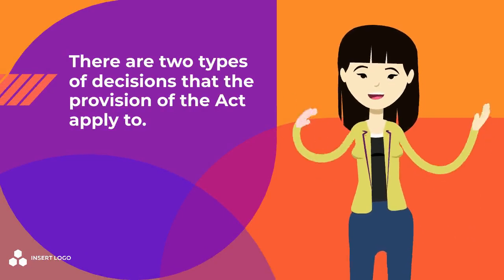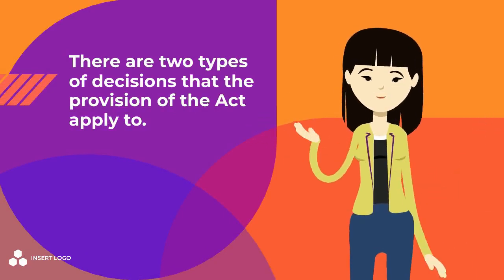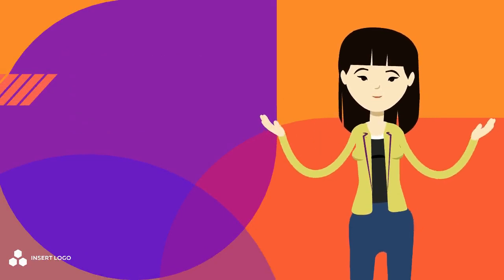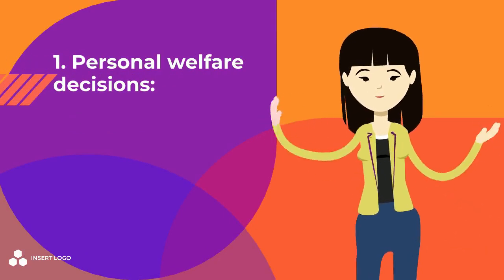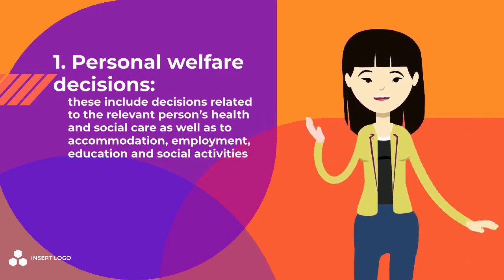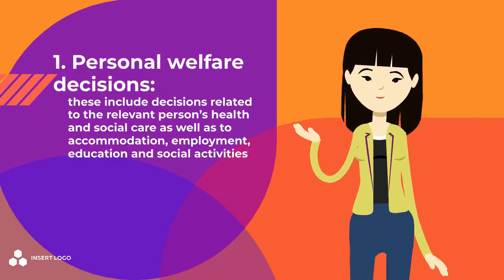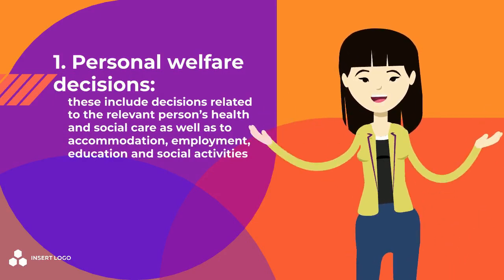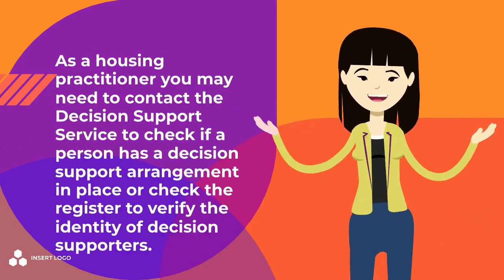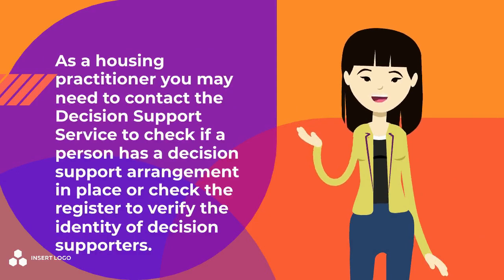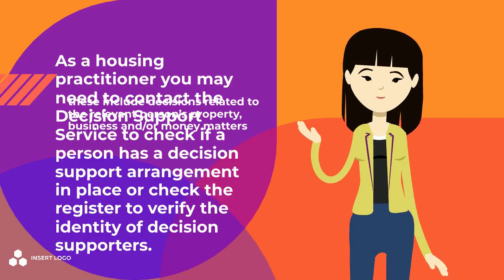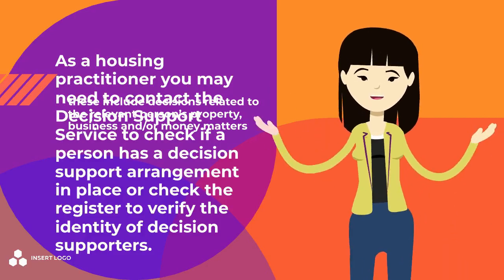Types of Decision. There are two types of decisions that the provisions of the Act apply to. These are: 1) Personal Welfare Decisions — these include decisions related to the relevant person's health and social care, as well as accommodation, employment, education and social activities; and 2) Property and Affairs Decisions — these include decisions related to the relevant person's property, business and/or money matters.